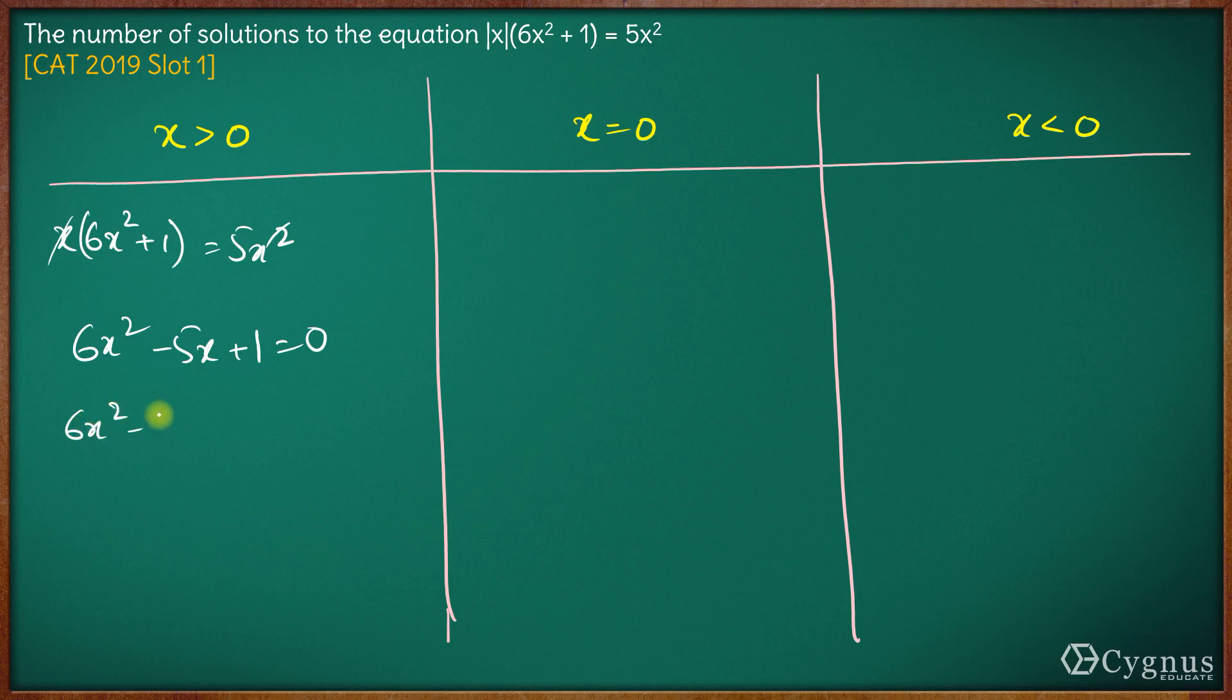We have 6x² minus 6x plus x, sorry, this will be minus 3x minus 2x plus 1 equals 0.